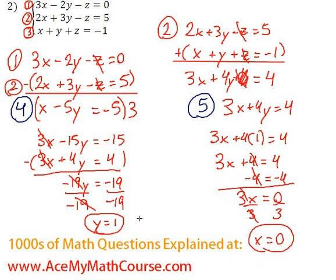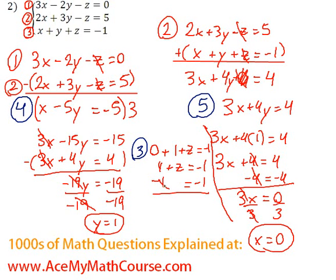Then I can finally plug in x and y into any of these equations to find z. So let's pick equation number 3 because it's nice and easy. So x is 0 plus y which is 1 plus z is equal to negative 1. So 0 plus 1 is 1 plus z equals negative 1. Subtract 1 from both sides. And z is negative 1 minus 1, negative 2. That's it.